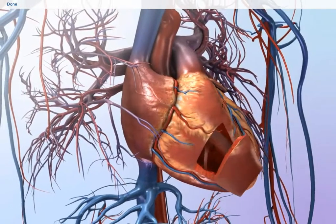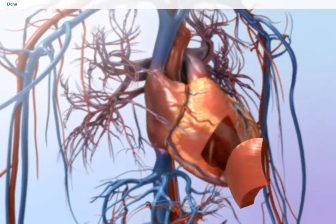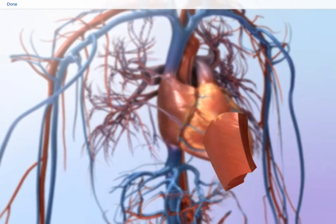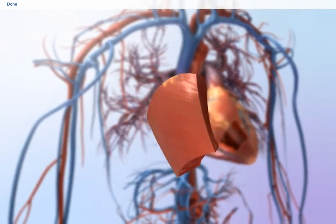The heart wall is composed of several layers. The three layers of the heart wall are the epicardium, the myocardium, and the endocardium.